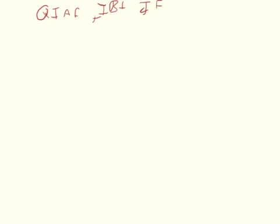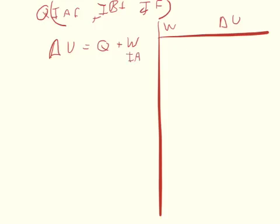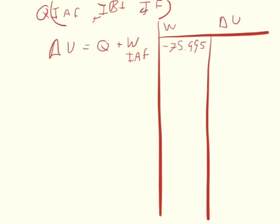Now the problem asks us to calculate the energy transferred by heat for each situation — IAF, IBF, and IF. We use the first law of thermodynamics: the change of internal energy equals heat transferred plus work done on the system. The internal energy started at 82 joules and ended at 168 joules, so the change of internal energy is 86 joules in every case.